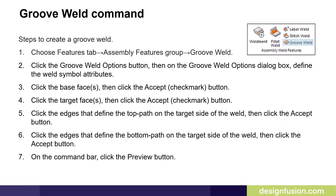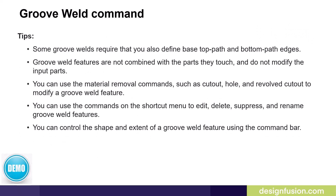This slide lists the basic steps to create a GrooveWeld. Keep in mind that steps 5 and 6 may not be necessary depending on the design scenario. Some additional information: some GrooveWelds require that you also define base top path and bottom path edges. GrooveWeld features are not combined with the parts they touch and do not modify the input parts. You can use material removal commands such as a cutout, hole, and revolve cutout to modify a GrooveWeld feature. You can also use the shortcut menu to edit, delete, suppress, and rename GrooveWeld features, and control the shape and extent of a GrooveWeld using the command bar.